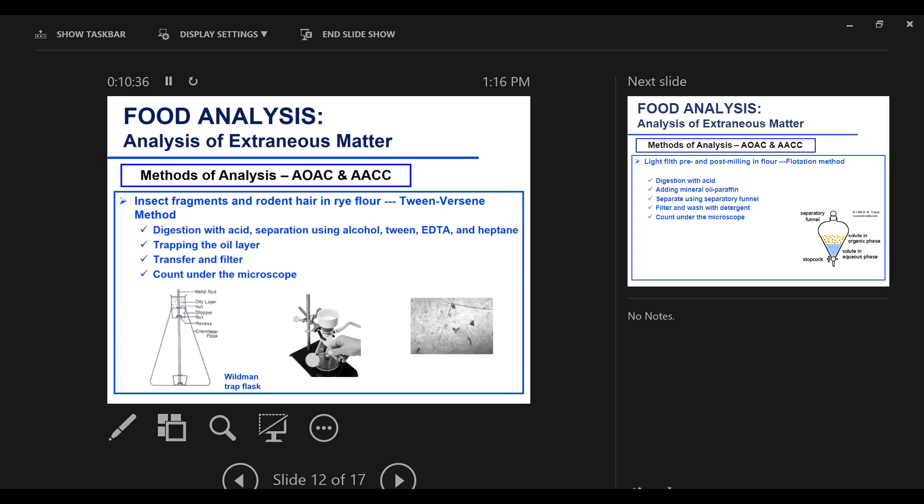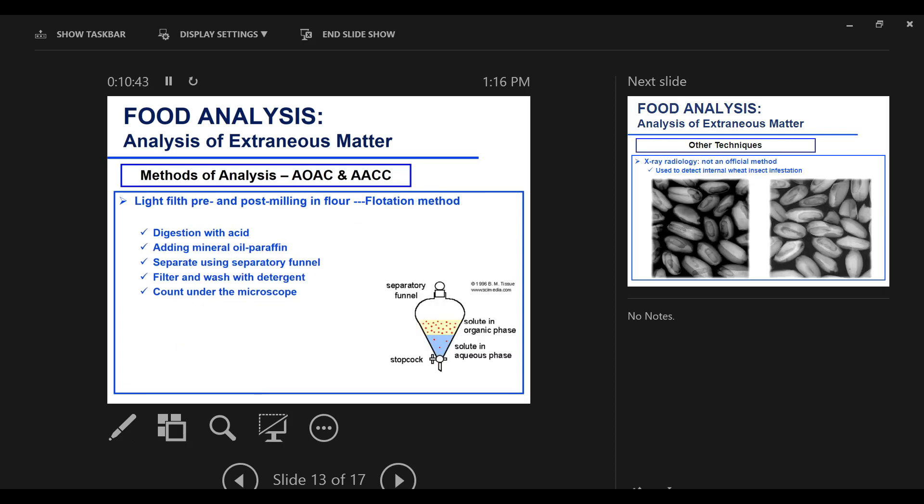Another light filth method for flour, we call it the flotation method. Here we digest the organic material with hydrochloric acid, and then we add mineral oil. We use a flotation jar where you add the oil and the acid. And then in the flotation method, the filth floats in the oil layer. You use a trap flask, you transfer it through a filter, and you put it under the microscope.